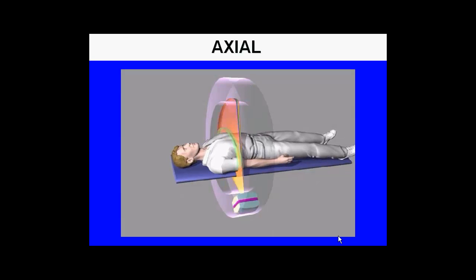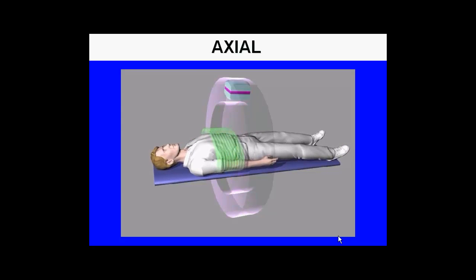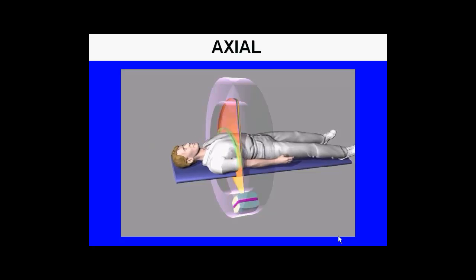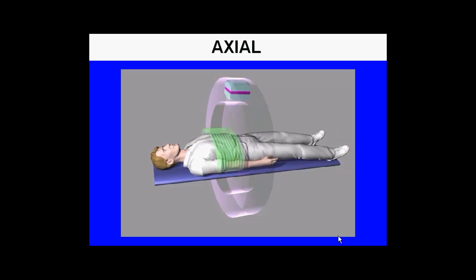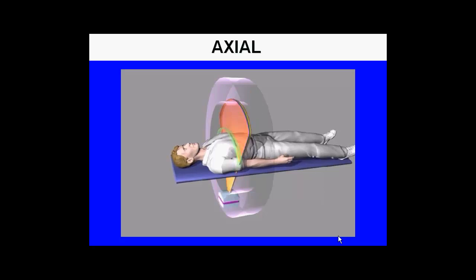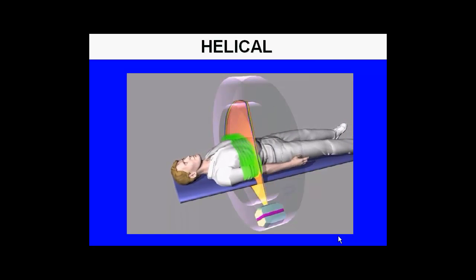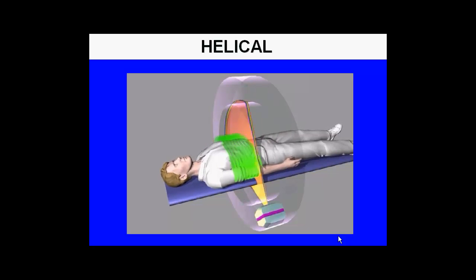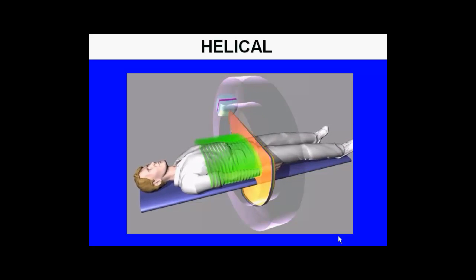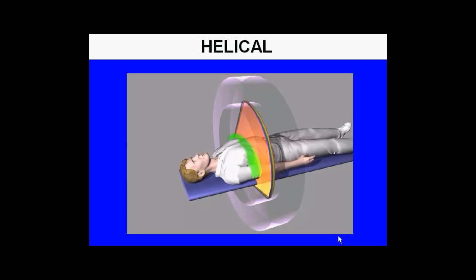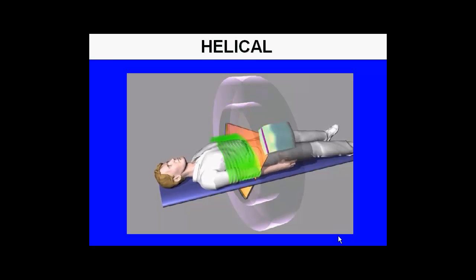In axial imaging, images are acquired each time the x-ray tube spins about the patient. Therefore the images are acquired in a manner of take a picture, move the table, take a picture. The helical mode basically continues to spin the camera about the patient while continuously moving the patient couch, thus producing information in a true helical or spiral manner, which is later reprocessed to parallel tomographic images.